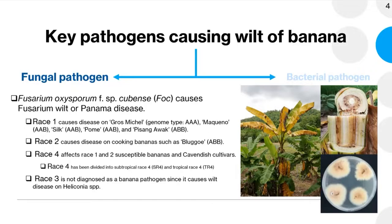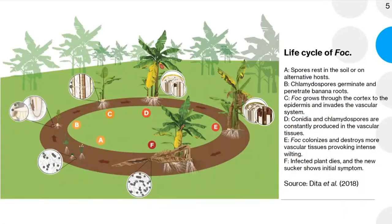FOC is divided into four races based on pathogenicity on banana cultivars. Race 1 causes disease on Gros Michel banana and some cultivars from AAB and ABB genome type banana. Race 4 is the most aggressive, causing losses in Cavendish banana and all cultivars susceptible to Race 1 and 2. Fusarium can survive in soil for over 10 years in resting spores called chlamydospores.